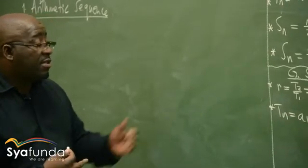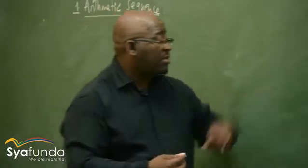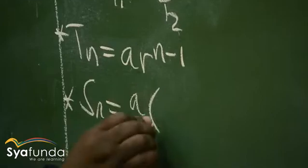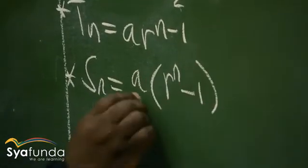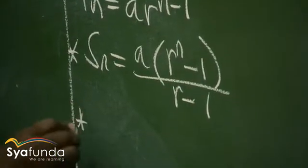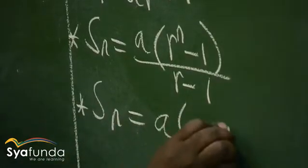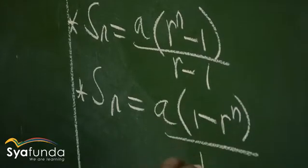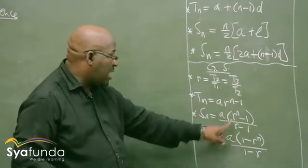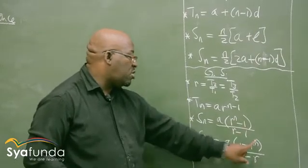After the general term, we talk about the sum. The first formula for the geometric sum would be S_n equals a into r to the power n minus 1, over r minus 1. The second one would be S_n equals a into 1 minus r to the power n, over 1 minus r. You can see the difference between this one and this one — it's only that r to the power n minus 1, and the denominator is also minus r to the power n.